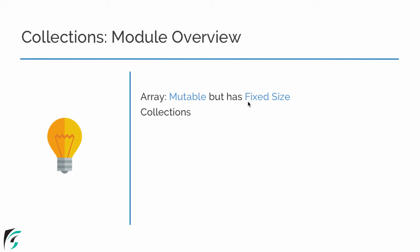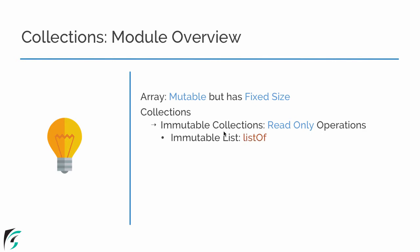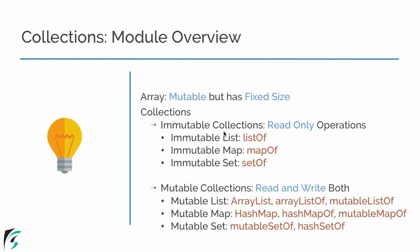Proceeding forward, we will check out the actual collections in Kotlin, such as the immutable collections and also the mutable collections. If you notice the two sections — the immutable collection and mutable collection — immutable collections are actually read-only. That is, once we define the collection, whether it's an array, list, map, or set, we can only read data from it. But the mutable collection supports both read and write operations, meaning once we define our collection such as list, map, or sets, we can read and write both.